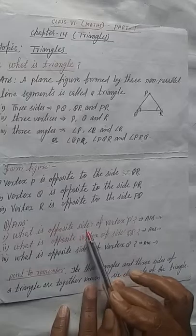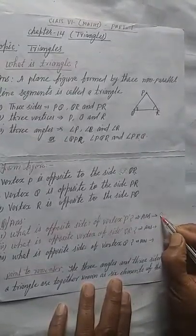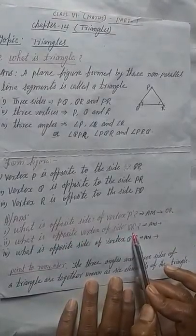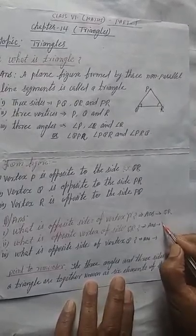So, what is the opposite side of vertex P means here? QR. So you can write here QR. Similarly, what is the opposite vertex of side QR? QR means vertex P. So it will be vertex P.